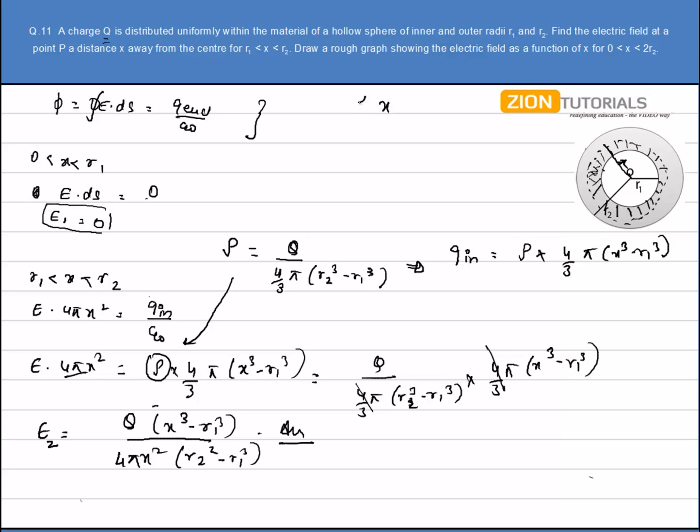Now if the distance is between R2 to 2 times R2, then clearly if I apply E equals 4πx². Let's say there is a sphere like this which is at a distance x. So 4πx² equals net charge enclosed, that will equal Q, because the total charge enclosed in the whole hollow sphere is Q. So the electric field comes out to be Q/(4πε₀x²).